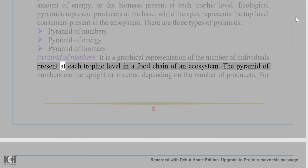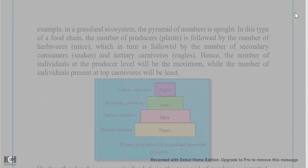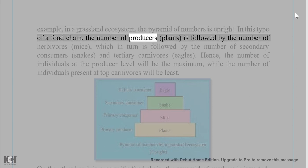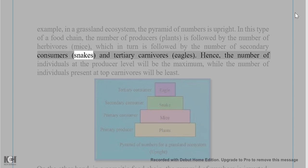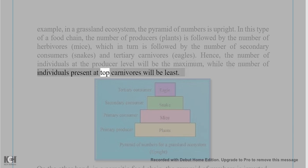Pyramid of numbers: It is a graphical representation of the number of individuals present at each trophic level in a food chain. It can be upright or inverted depending on the number of producers. For example, in a grassland ecosystem the pyramid of numbers is upright — producers (plants) are most numerous, followed by herbivores (mice), secondary consumers (snakes), and tertiary carnivores (eagles). The number of individuals at the producer level is maximum while top carnivores are least.